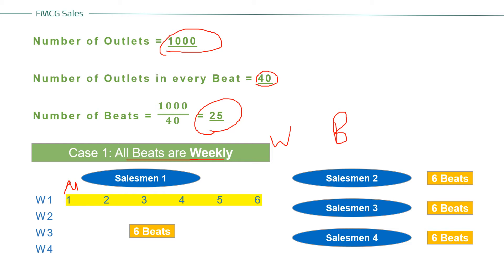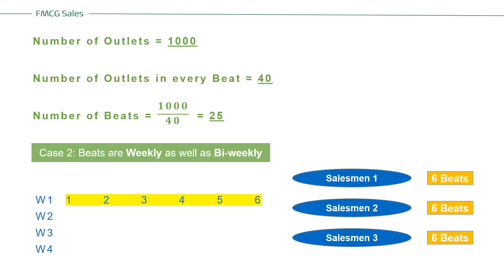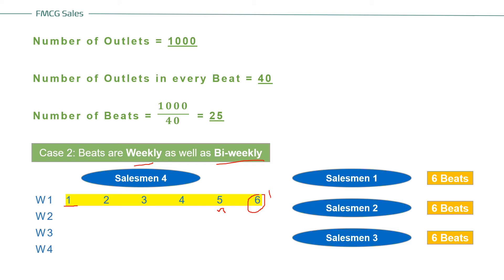Let's take one more case where beats are both weekly and bi-weekly — how many salesmen are required? Salesman 1, 2, and 3 cover weekly beats — six each — so 18 beats are already covered. We need to cover 7 more beats. For this, we take a fourth salesman who covers beats both weekly and bi-weekly. Monday through Friday — five days — he covers weekly, giving five beats.